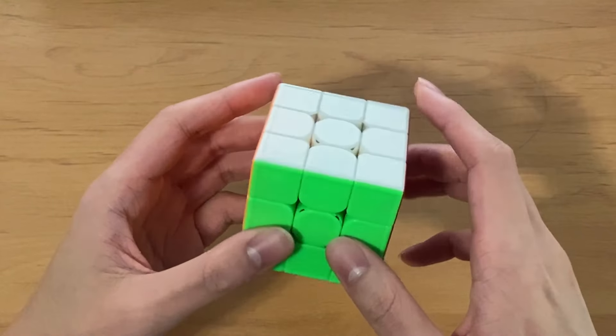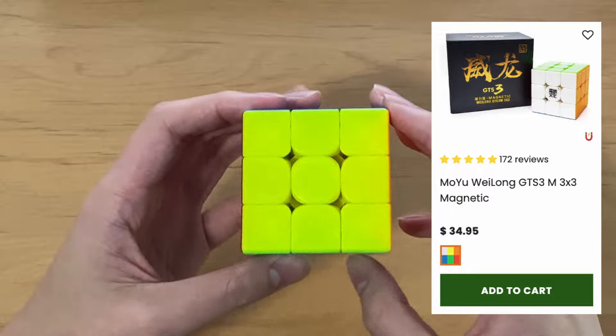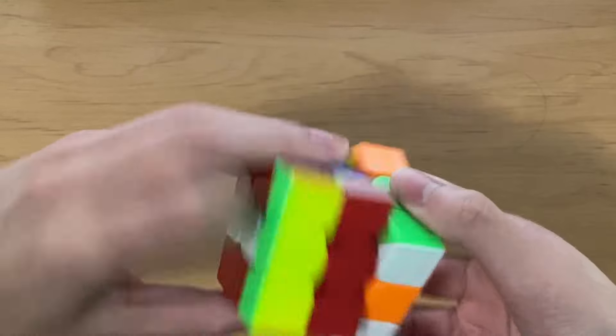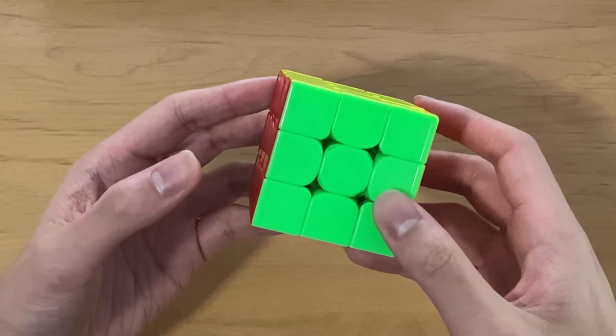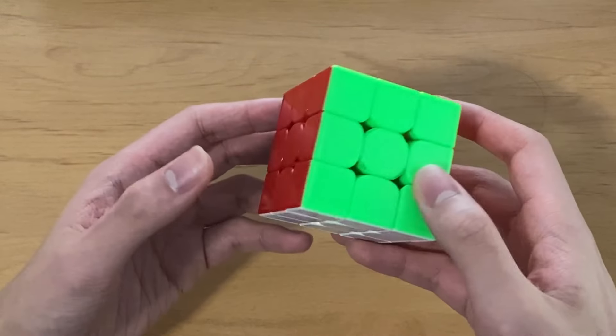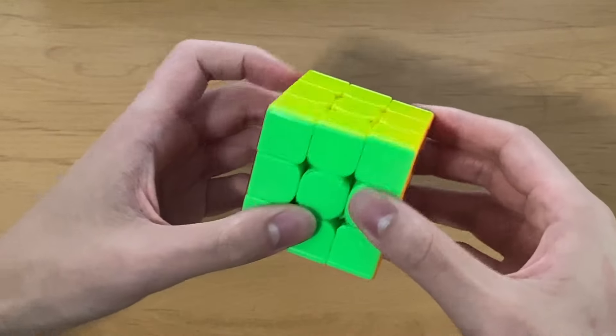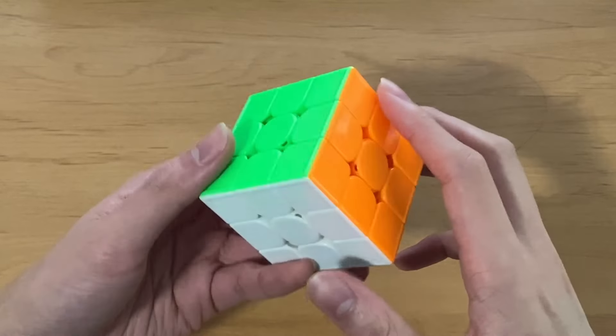For 3x3 blindfolded, I use the GTS3M. It's a pretty old cube, but a lot of world-class blind solvers use this cube because of the good slices. Even though this cube is several years old, the slices I think are better than that of any other cube, even those released more recently. And I can get some of my best 3-style turning on this cube.